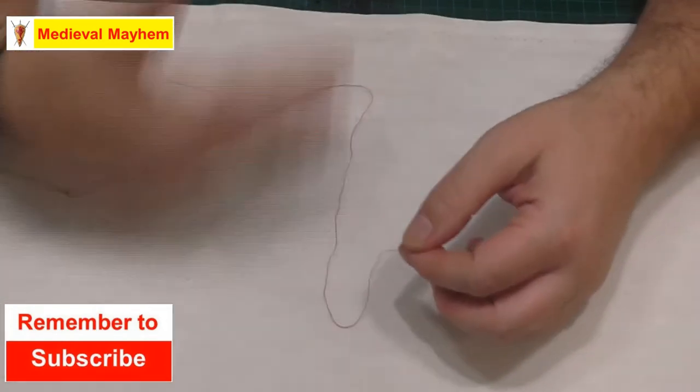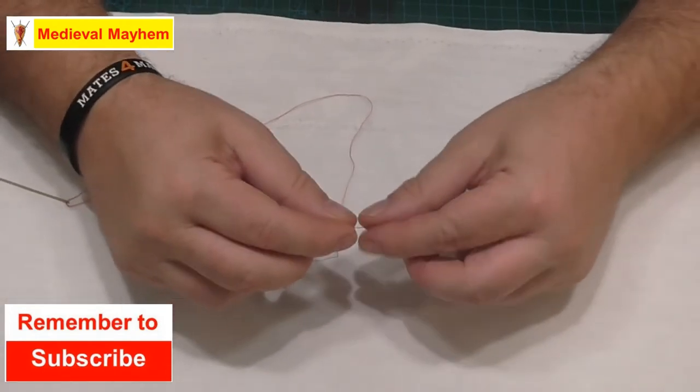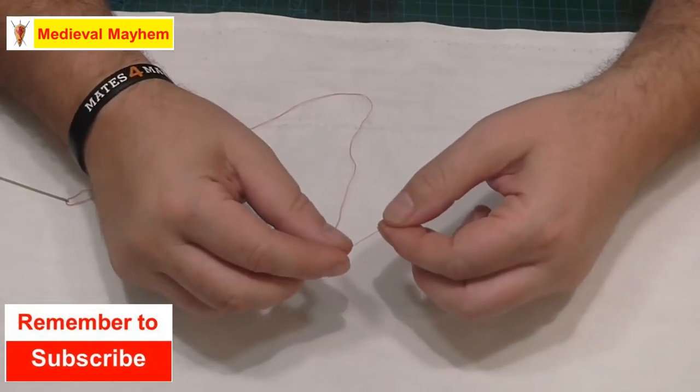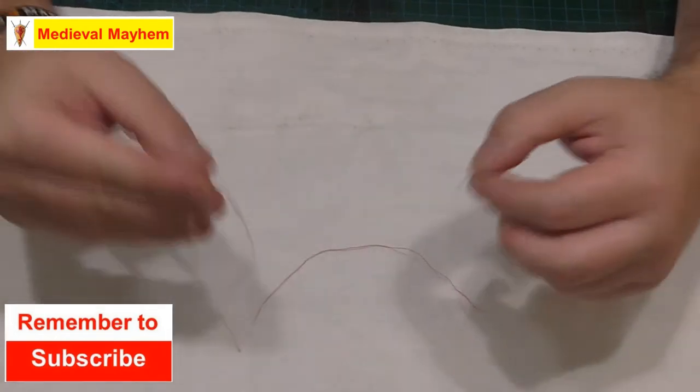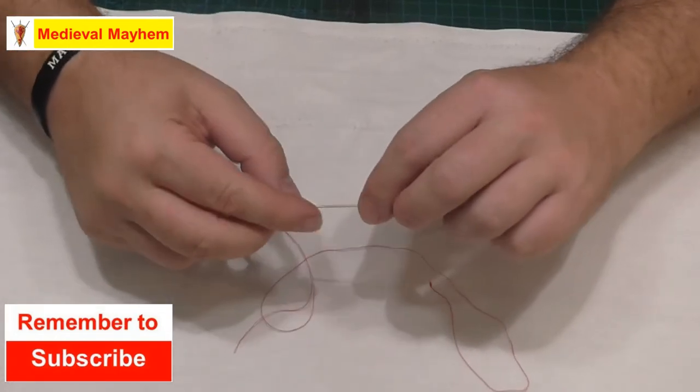Alright, so let's take a quick look. Today I'm using an off-cut of coarse linen. I have a piece of linen thread with me. I'm using a needle from a company called Make Your Own Medieval.